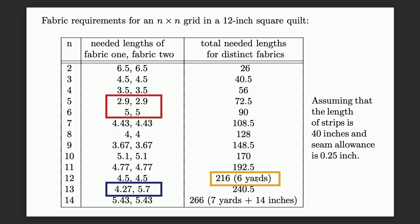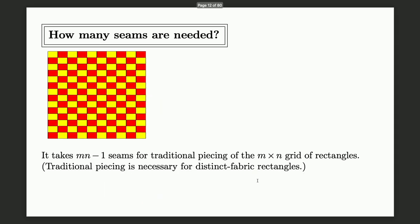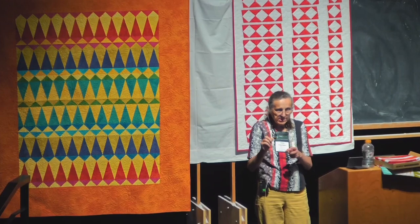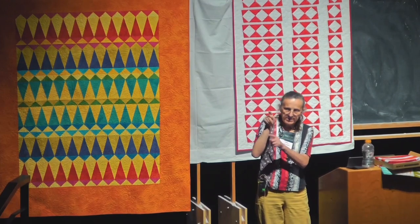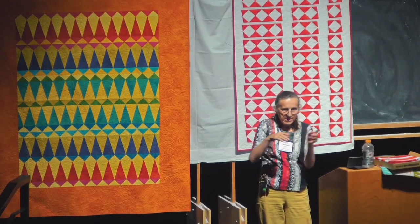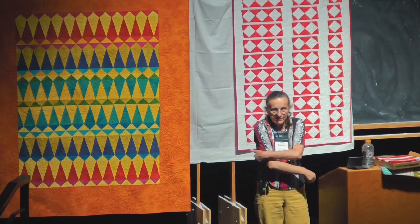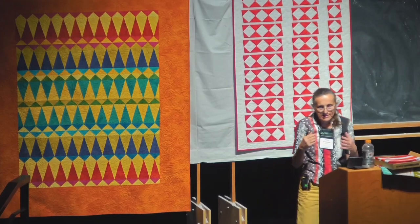Another place where mathematics can bring efficiency and streamlining into quilting is minimizing the number of seams. The difference between a seam and a stitch: a stitch is when you put your needle down through the fabric and out — that's one stitch. By a seam, I mean one complete sewn joint. Here's one seam, here's one seam, here's one seam — and I want to minimize those.